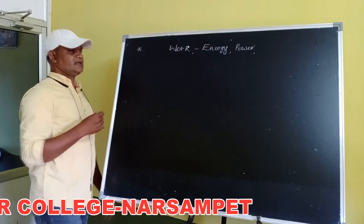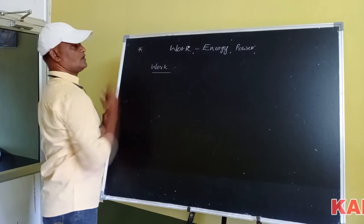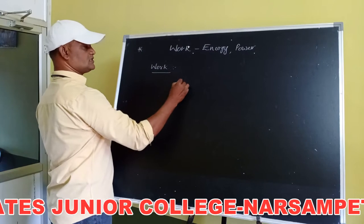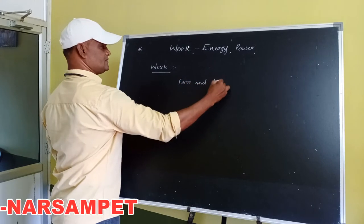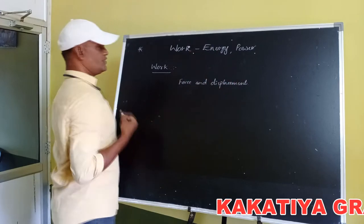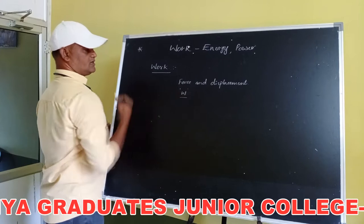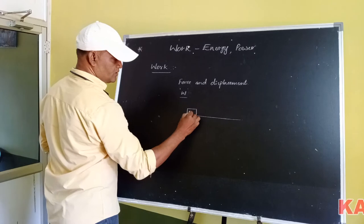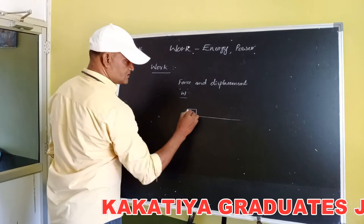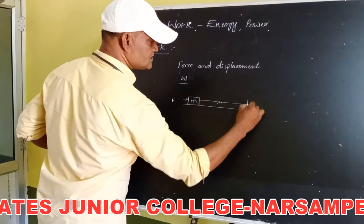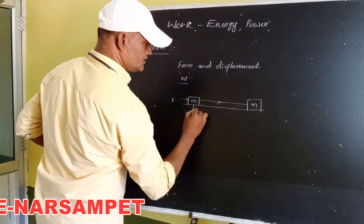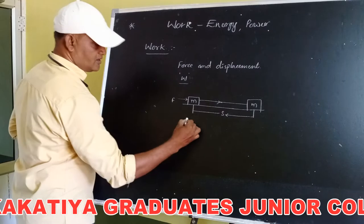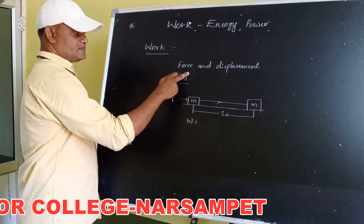Generally, work is defined as the product of force and displacement, which is denoted by W. When a body is placed on a smooth horizontal floor, the mass of the body is considered as M. When we apply force, the body gets displaced along the direction of force. The product of force and displacement is known as work.